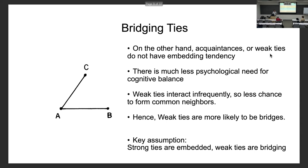Granovetter makes the assumption that strong ties tend to be embedded ties — you have this triadic closure going on — whereas weak ties tend to be the bridging ties that give you access to informational resources that are far away, socially speaking.